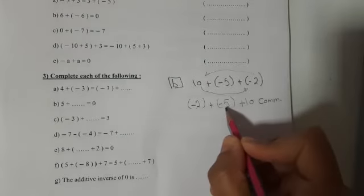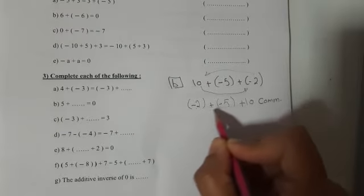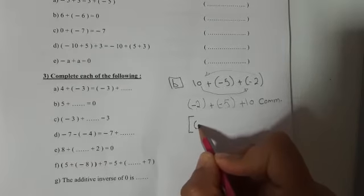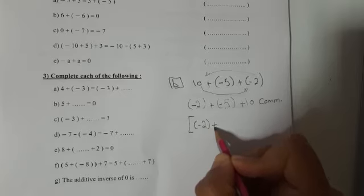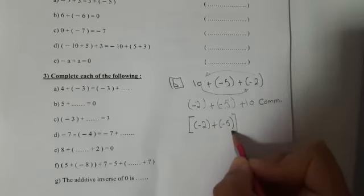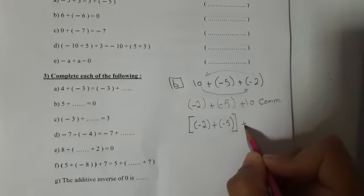Okay, negative 2 and negative 5, both of them having the same sign. So I will collect them inside a group. It will be negative 2 plus negative 5. Close the bracket. This is a group plus 10.